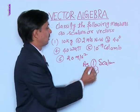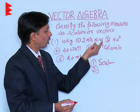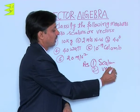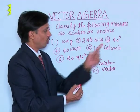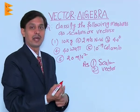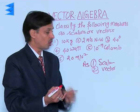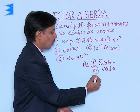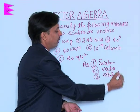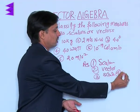Second: 2 meters in the northwest direction — magnitude and direction are both given, so the second one is a vector. Third: 40 degrees — it is an angle but no direction is specified (no reference axis given), so the third one is also a scalar. Fourth: 40 watt — no direction, it is a scalar.